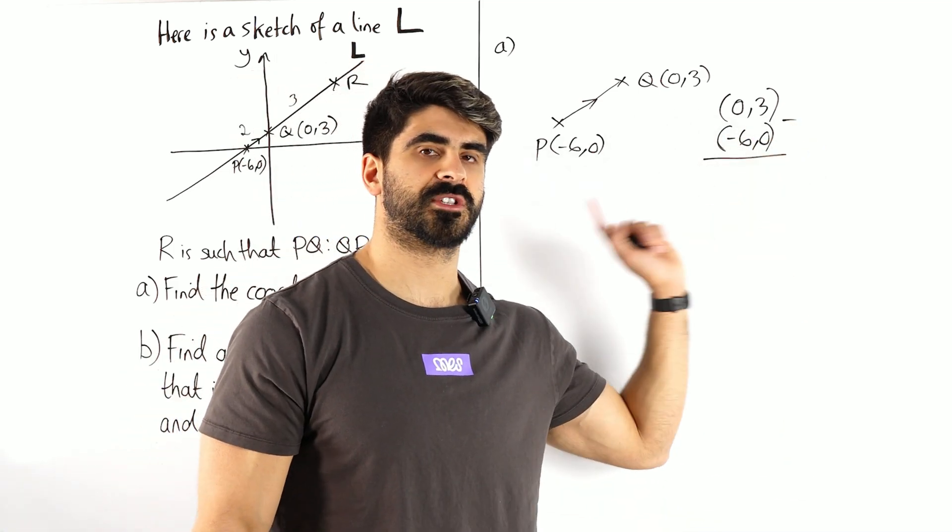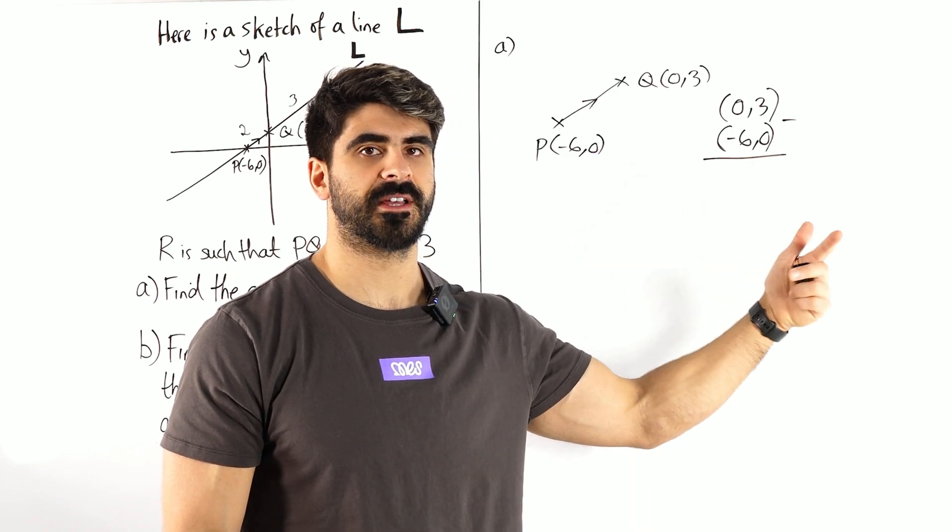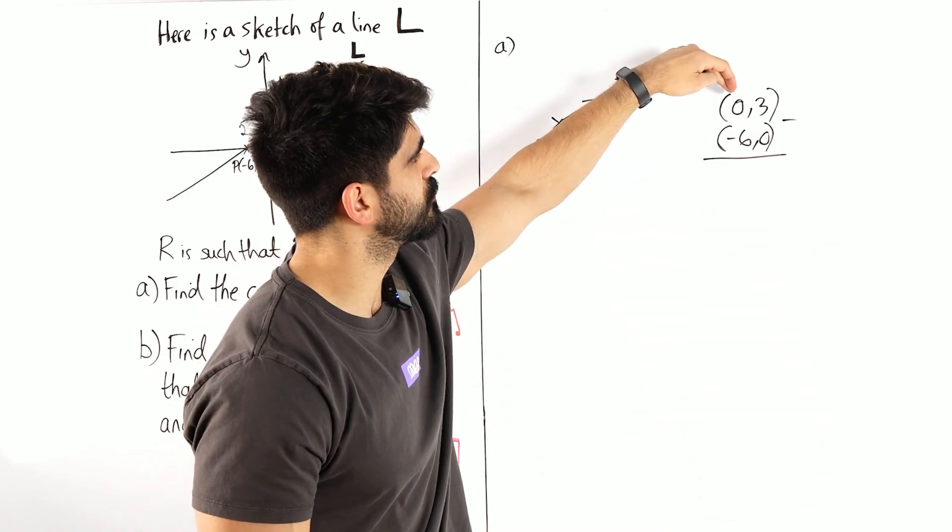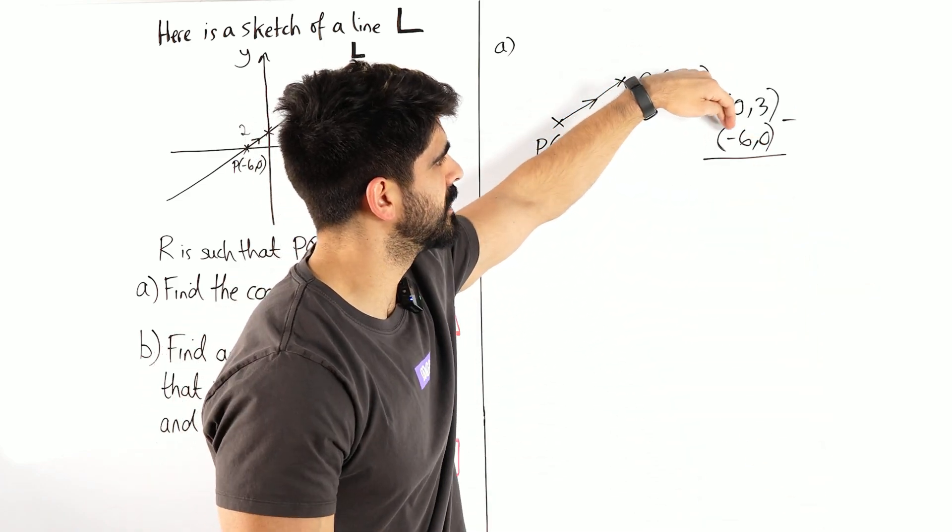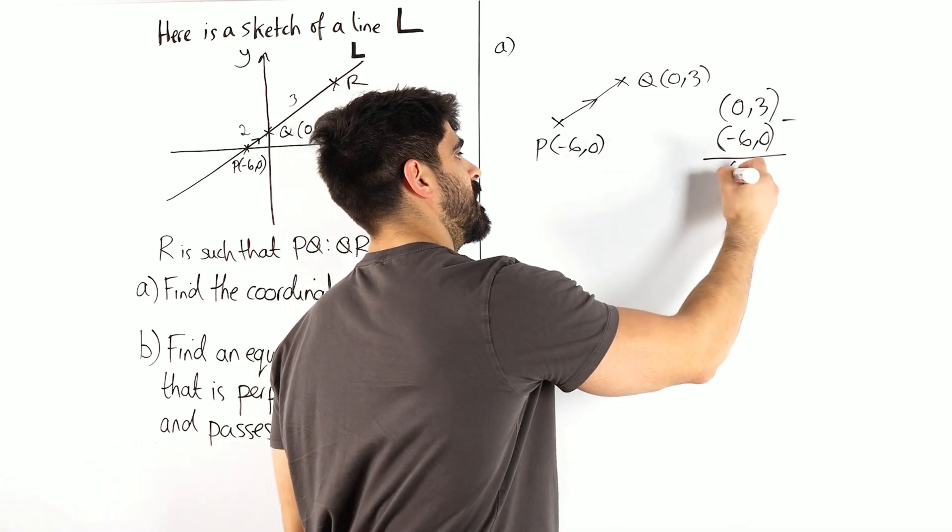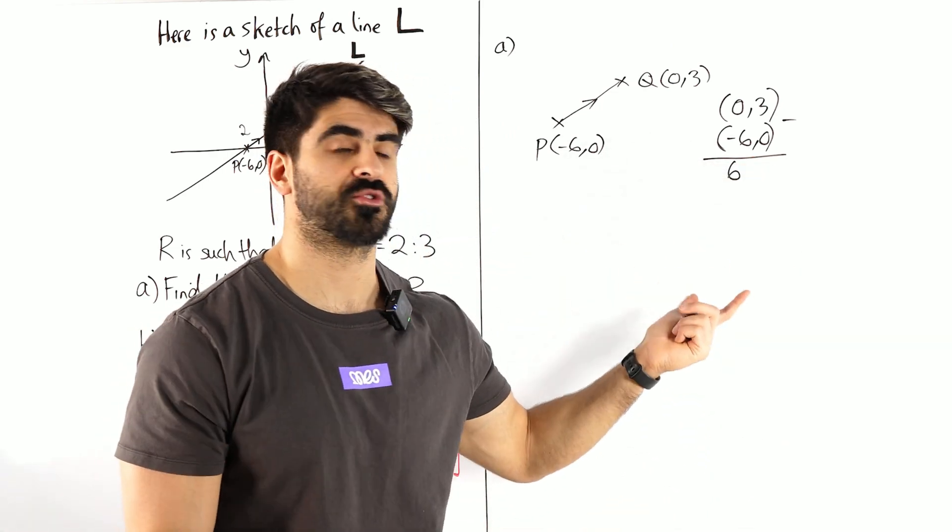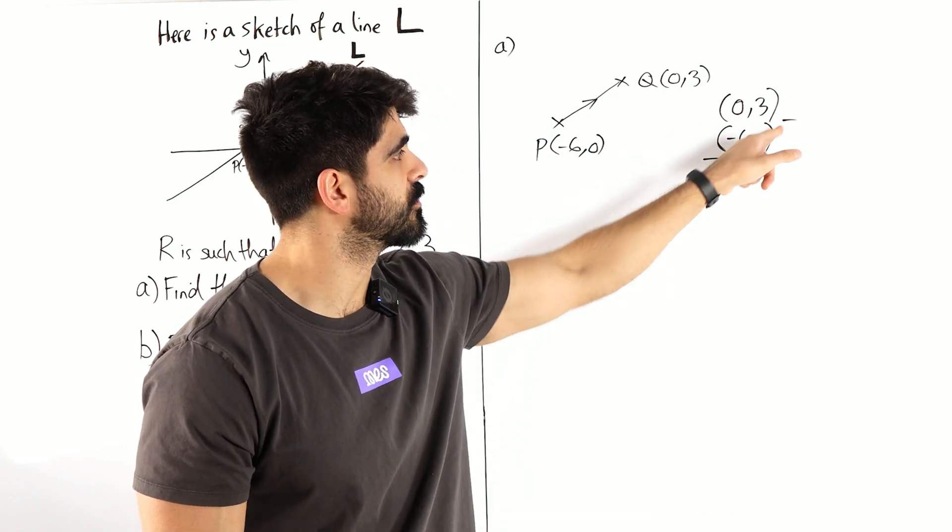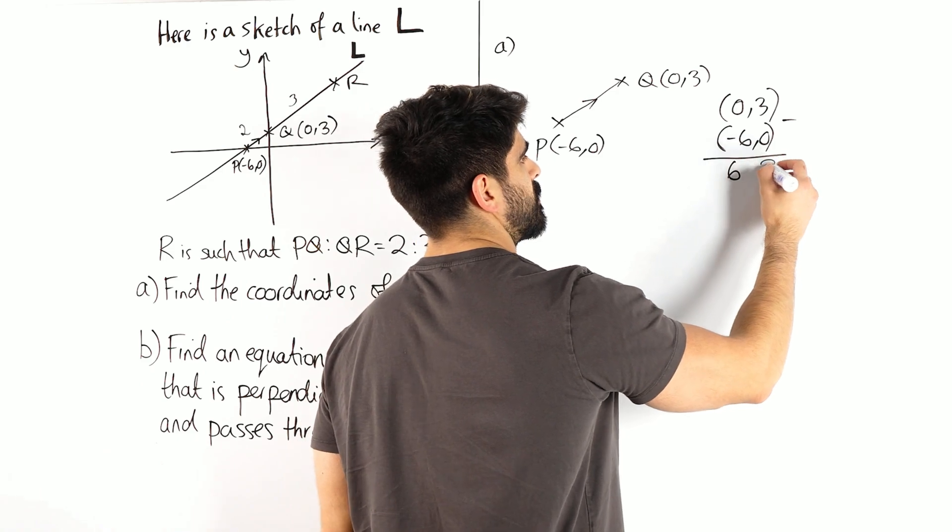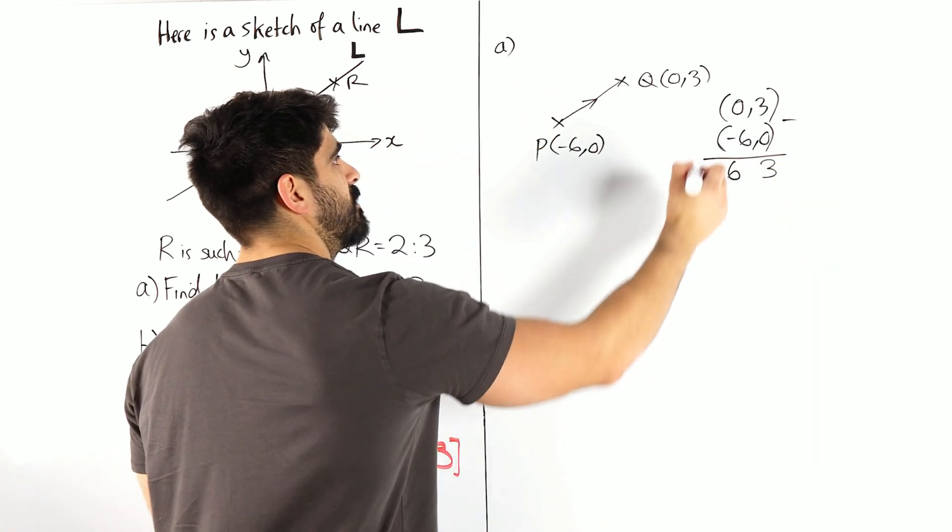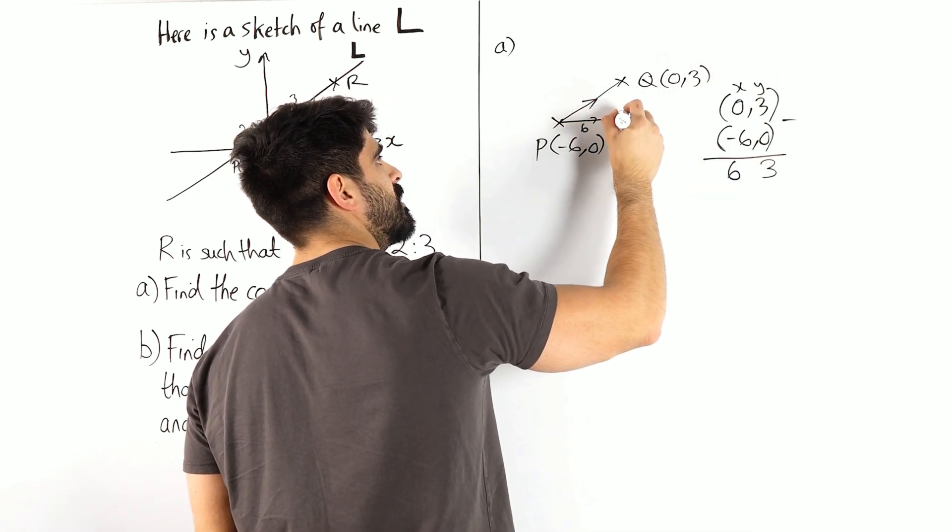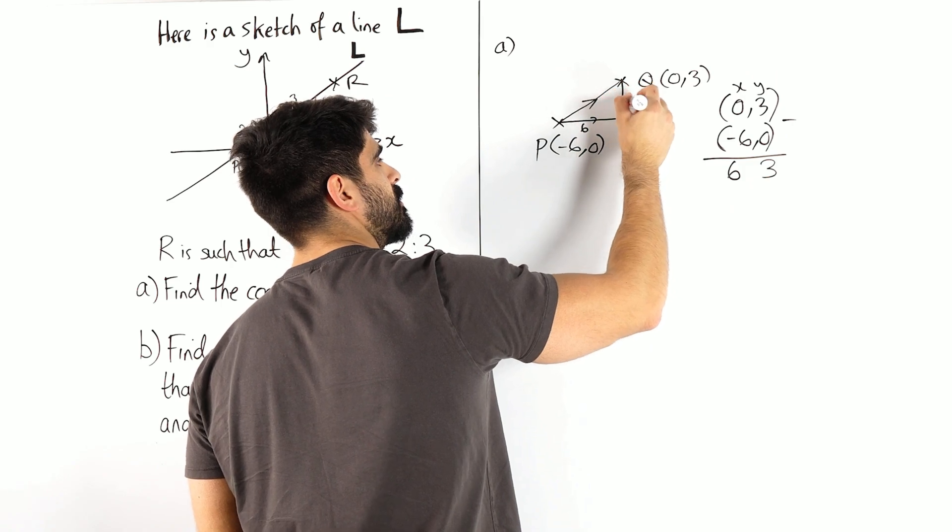So this is known as column subtraction. My students know it as Colin, like Colin the caterpillar. So column subtraction, 0 minus minus 6 is 6. And this is the reason why I do column subtraction because students always forget about the double negative. Then we have 3 minus 0 is 3. So all that's saying, remember this is the X and this is the Y, so we're going across 6 and we're going up 3.